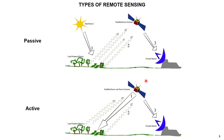In passive remote sensing, the source of energy is the sun. The energy from the sun interacts with objects on the earth, and the objects also emit some radiation, which is captured by the satellite and transmitted to the ground station. In active remote sensing, the sun is not the source; the satellite itself transmits incident radiation to the surface, interacts with the object, and the backscatter is recorded by the satellite and transmitted to the ground station.